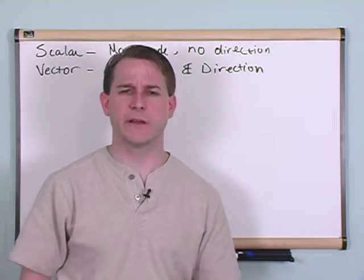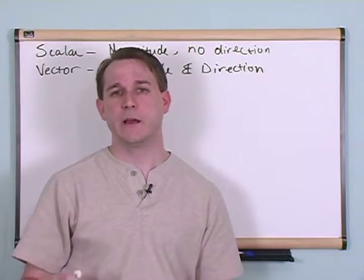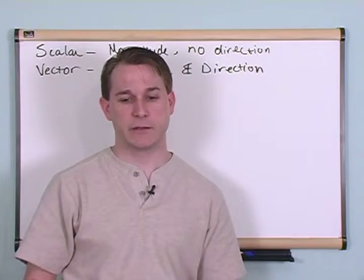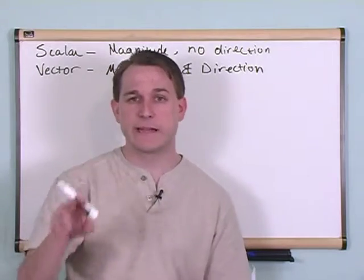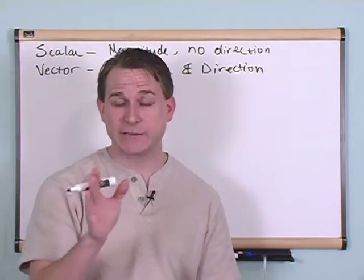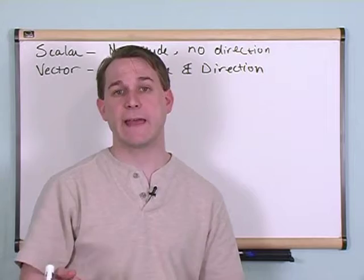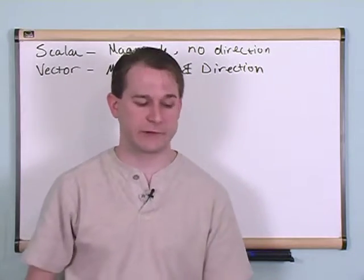There's tons of other vectors in real life. The electric field, the magnetic field—when you have two magnets and you start to plot the magnetic field lines, they have a magnitude, in other words a strength, and they have a direction, so they're pointing in a certain direction.